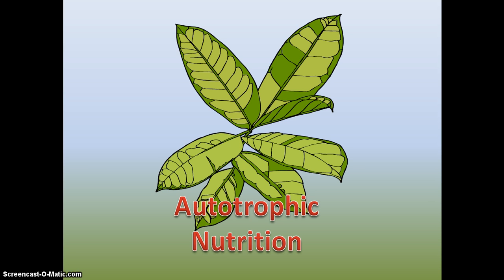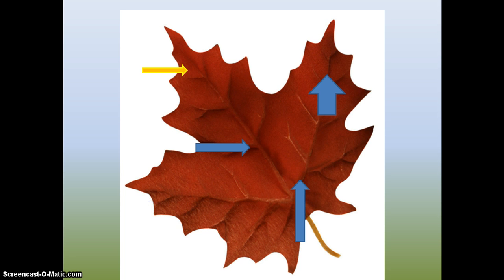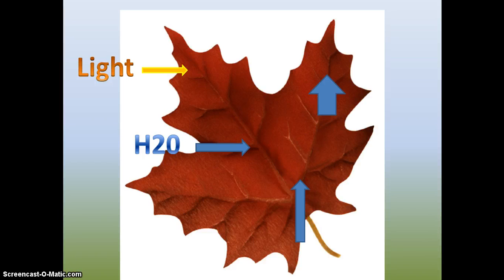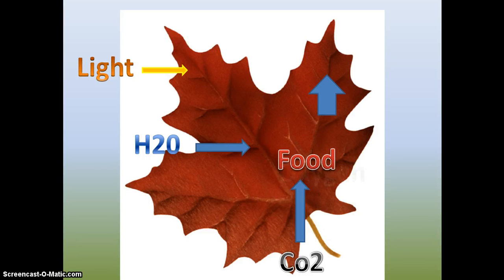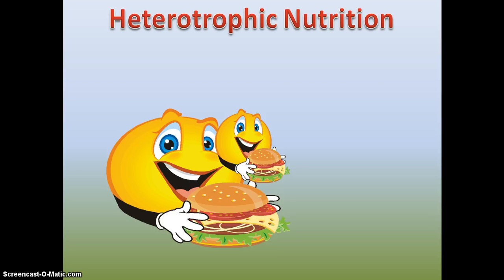In autotrophic nutrition, organic food is made from inorganic material. The autotrophic organism contains the green pigment called chlorophyll, which is capable of trapping sunlight. This trapped sunlight is utilized by the autotroph to make food by combining inorganic materials like carbon dioxide and water. In this way, food is made and oxygen is also released.